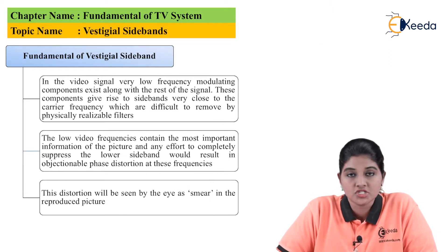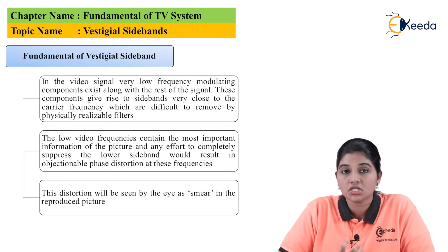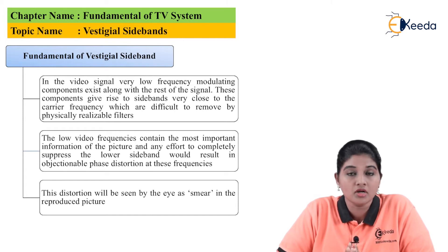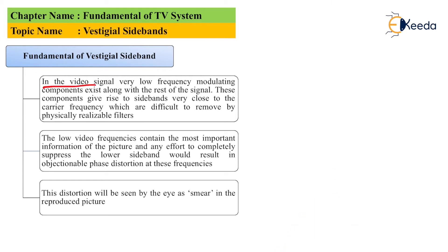In the topic of vestigial sideband, first we are going to understand the fundamentals. In a video signal, the low frequency modulated components are present along with the rest of the signal. These low frequency modulated components result in the formation of a sideband called the lower sideband, which is very close to the carrier frequency. As they are very close to the carrier frequency, it is very difficult to remove these low frequency modulated components.